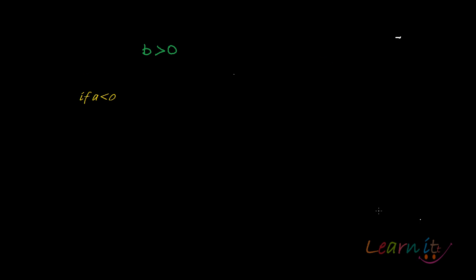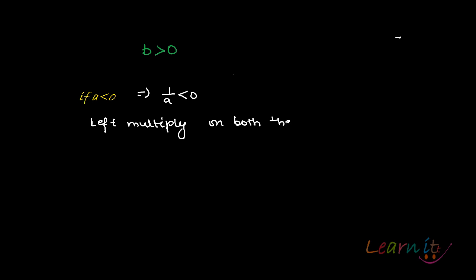Now in Case 2, what happens if a is less than zero? If a is less than zero, the reciprocal 1/a will also be less than zero. If we left multiply on both sides by 1/a, we have (1/a)·a·b on the left.